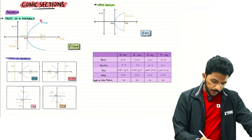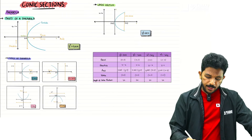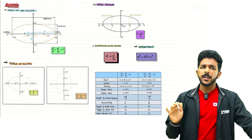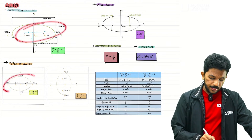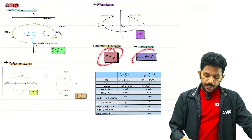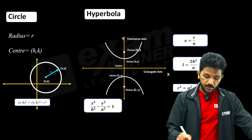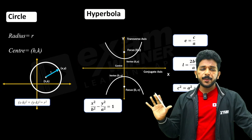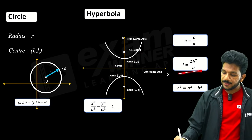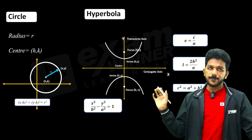Let's go to the conic section. Parabola — this is the length of the parabola and it is very important. There is an entire table of the lattice you can see in the live class. There are two types of ellipse — the formulas are in the table. For hyperbola: eccentricity e equals c by a, and latus rectum L equals 2b squared by a.